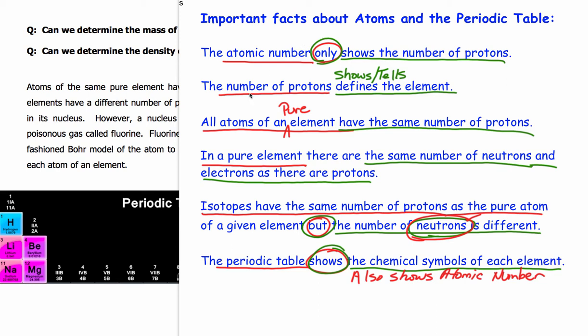The atoms of a pure element have the same number of protons, so atoms of a pure element, all the atoms, say, of pure gold, are going to have the same number of protons in them. So, and this is important in understanding that whatever the number of protons are in a given atom, you go look at the atomic number in the periodic table.